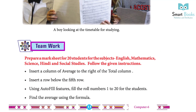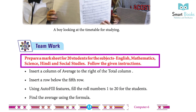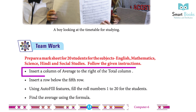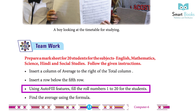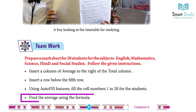Team Work: prepare a mark sheet for 20 students for the subjects English, Mathematics, Science, Hindi, and Social Studies. Follow the given instructions: insert a column of average to the right of the total column; insert a row below the fifth row; using the auto fill feature, fill row numbers 1 to 20 for the students; find the average using the formula. Answer: students will do it themselves.